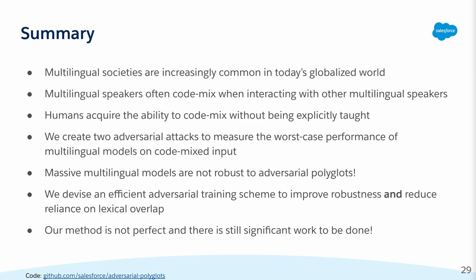To summarize, multilingual societies are increasingly common in today's globalized world, and multilingual speakers often code mix when interacting with other multilingual speakers, acquiring this ability without being explicitly taught. We create two adversarial attacks to measure the worst-case performance of multilingual models on code-mixed input and show that these models are not robust to adversarial polyglots. Finally, we devised an efficient adversarial training scheme to improve robustness and reduce reliance on lexical overlap. However, our method is not perfect and there is still significant work to be done to bring worst-case performance closer to the clean performance. Thanks for listening — you can find our code at the link below, and feel free to send us a message or drop by the live sessions if you have any questions.